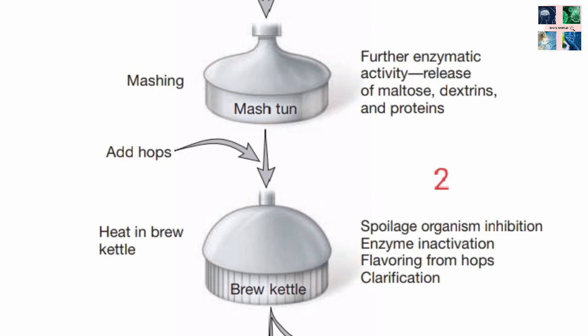The next step is wort clarification. The wort is fed into the whirlpool and starts to rotate. Hop particles that have not dissolved and protein — the so-called trub — form a cone in the middle of the container, and the clear wort can be drawn off at the side. The clear wort is then cooled to a temperature of between 10 to 20°C in the wort cooler.